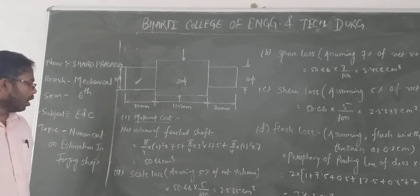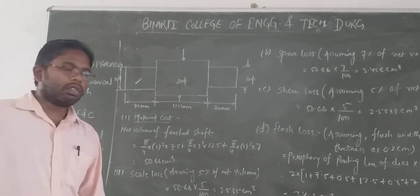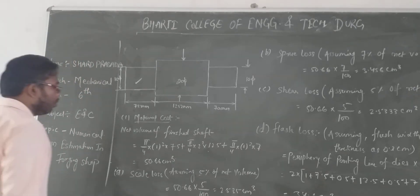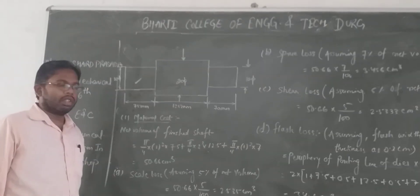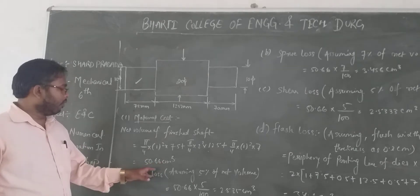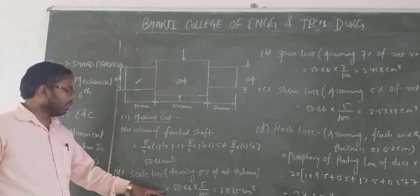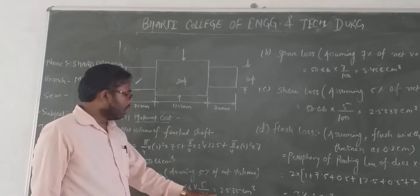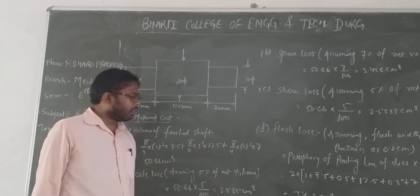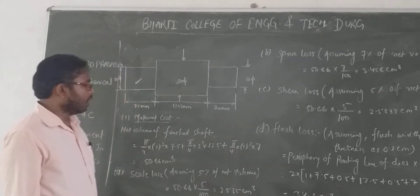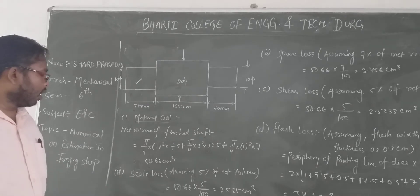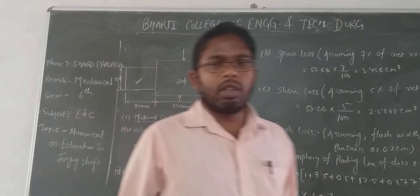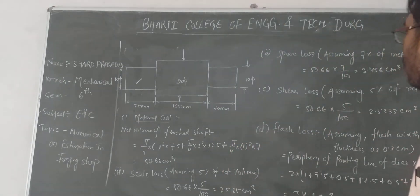Now, scale loss. Scale loss equals 5% of net volume. So 50.66 × 5 divided by 100 equals 2.533 cm³. This is the scale loss.